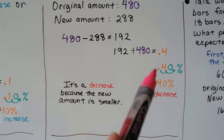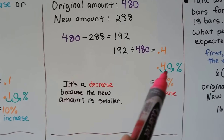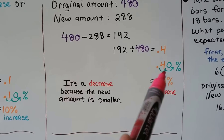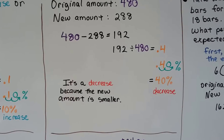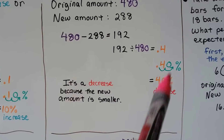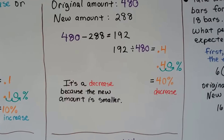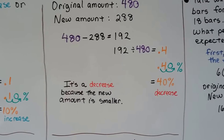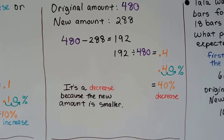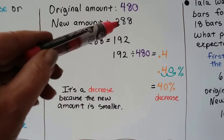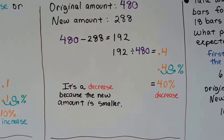We get 0.4. We change that to a percentage by moving the decimal over two hops and putting a zero in the missing place value, giving us 40%. We know it's a decrease because the new amount is smaller — so this is a 40% decrease.